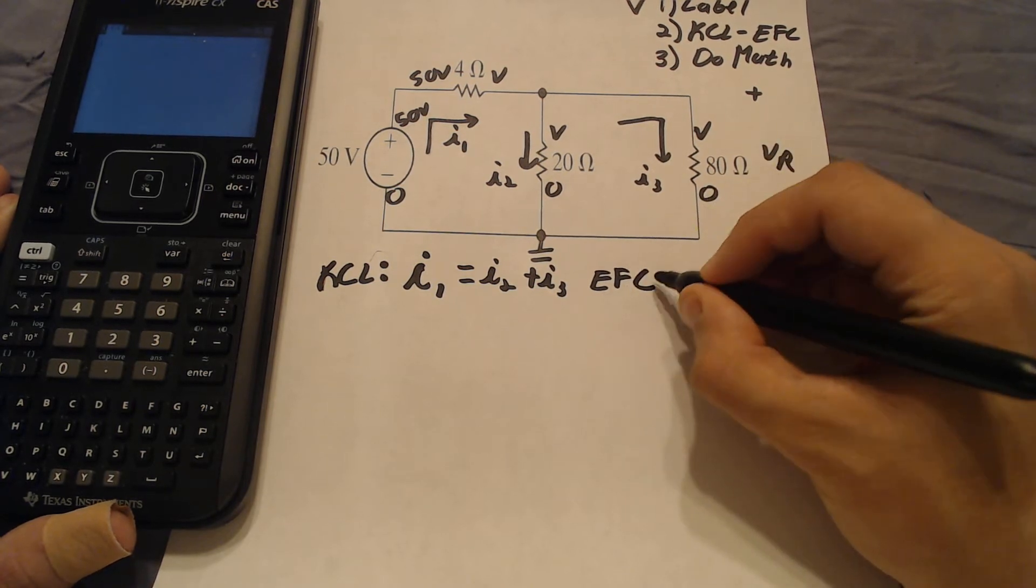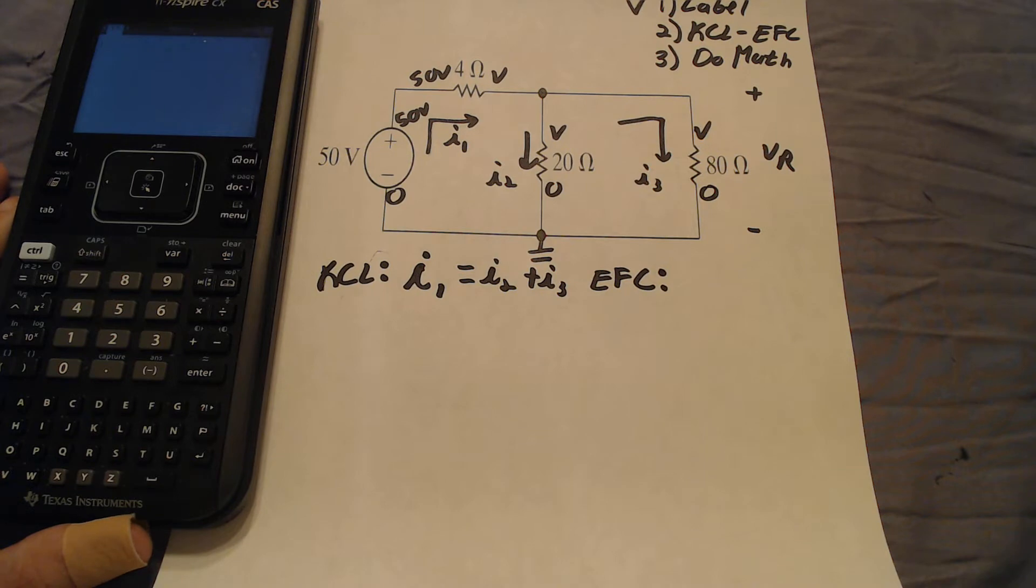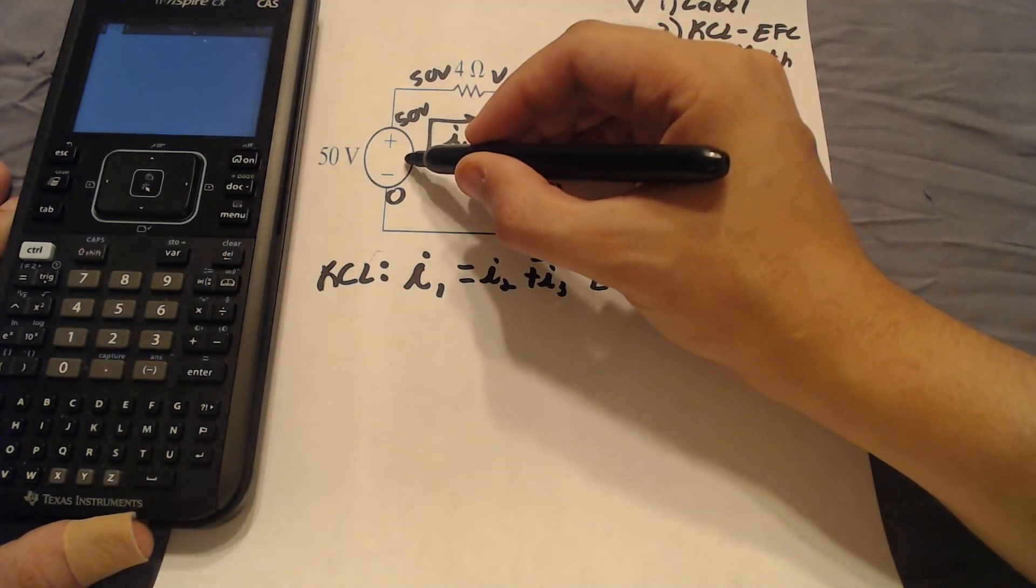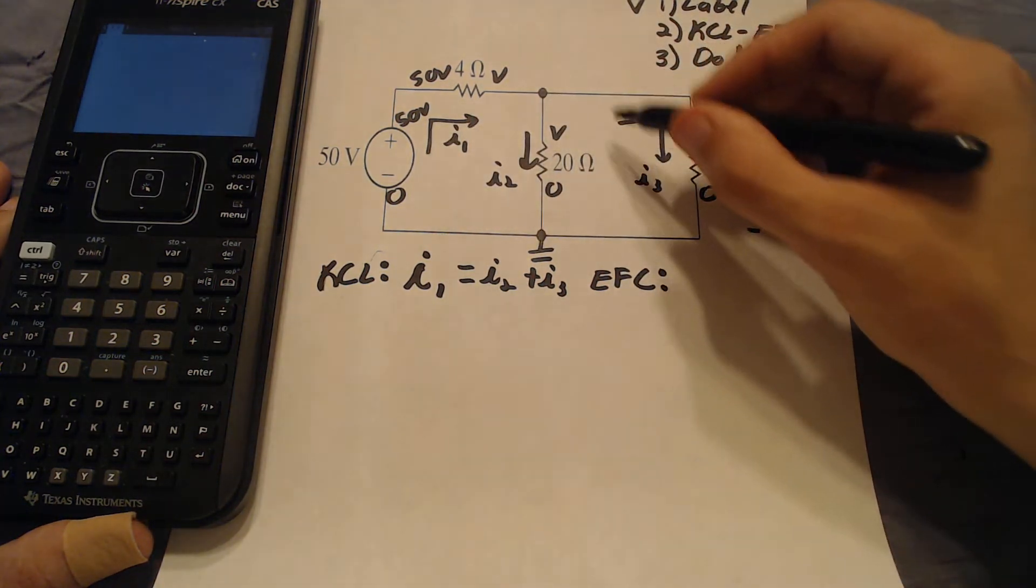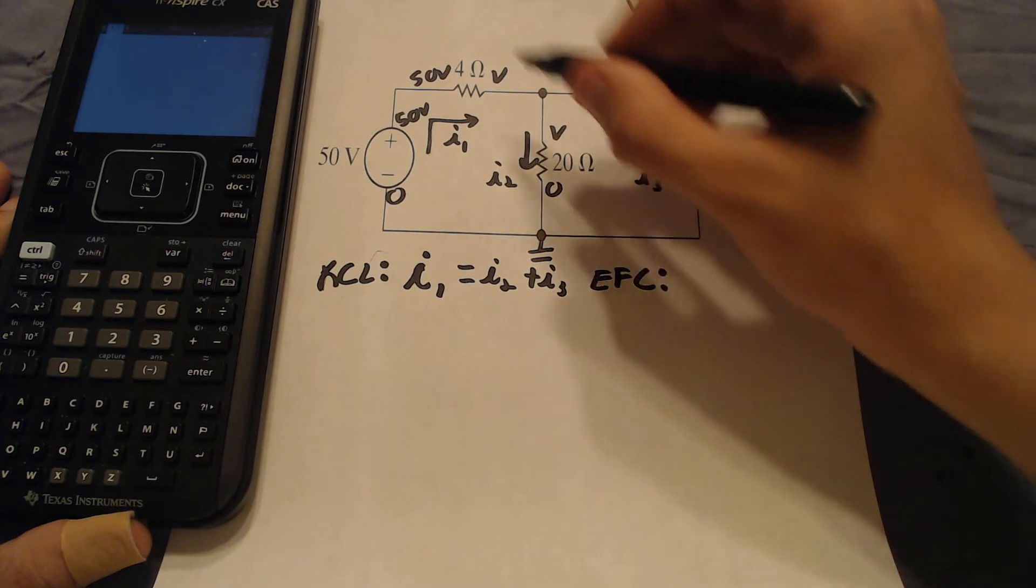And I have to do the EFC for this circuit, which stands for equation for components. Now this circuit has four components, but we already incorporated the equation for this component, the 50 volt voltage source, into the circuit when we were labeling. So we only have to find the equation for the resistors.